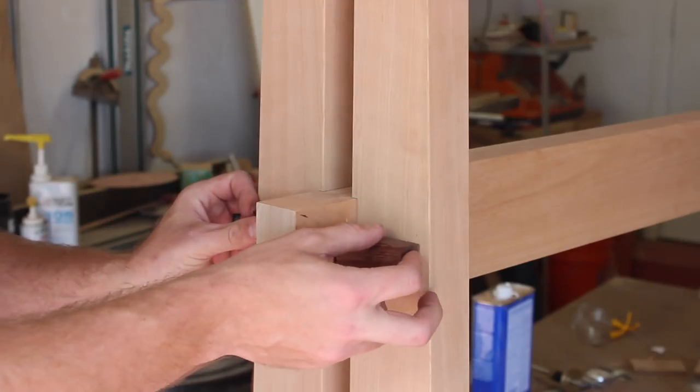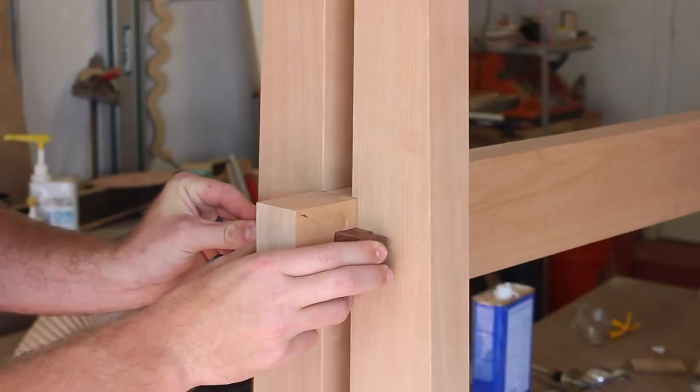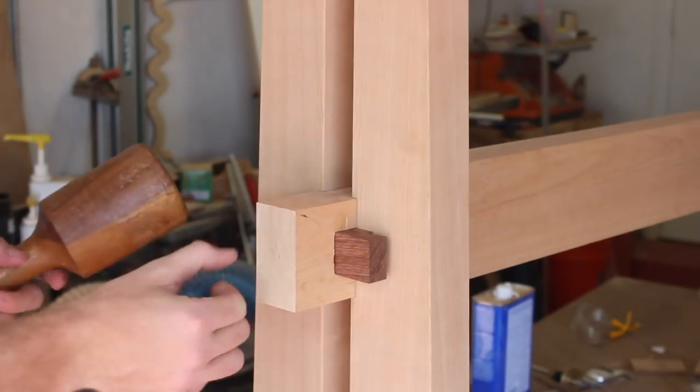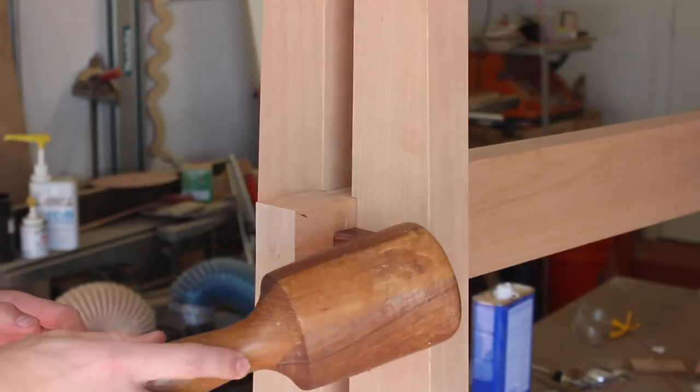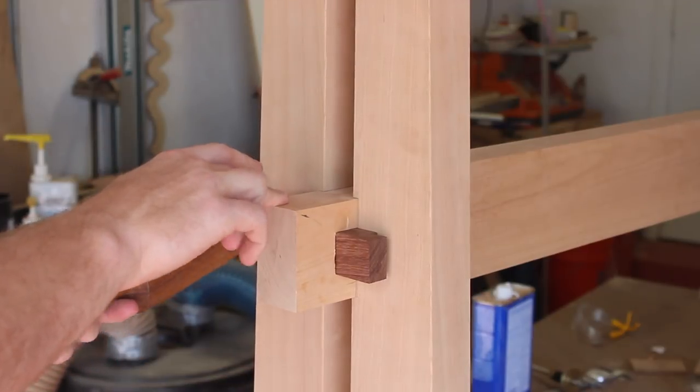Here's the first test fit of the wedges. You can see that it takes two of them to lock the stretcher into place. This is good because I can knock the table down into easier to manage pieces in case I want to take it on vacation with me.